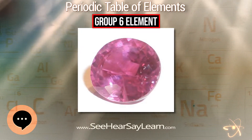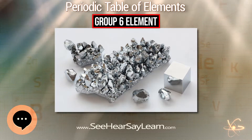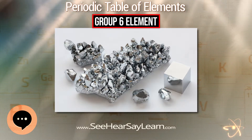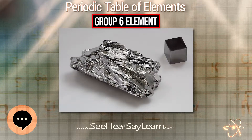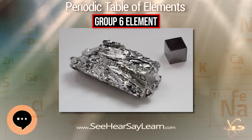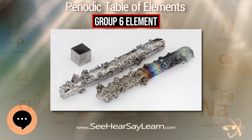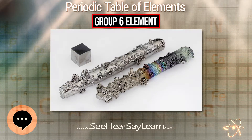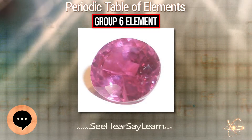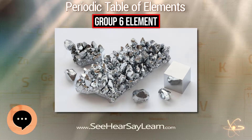The mineral was crocoite, with a formula of PbCrO₄. Studying the mineral in 1797, Louis Nicholas Vauquelin produced chromium trioxide by mixing crocoite with hydrochloric acid, and metallic chromium by heating the oxide in a charcoal oven. A year later, he was also able to detect traces of chromium in precious gemstones such as ruby and emerald.